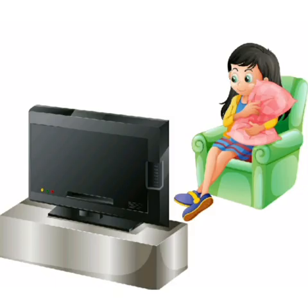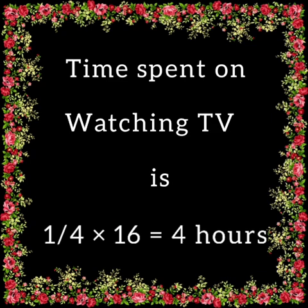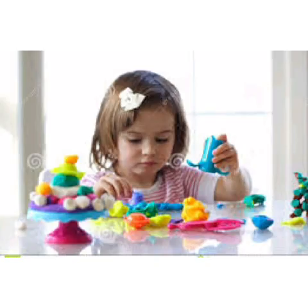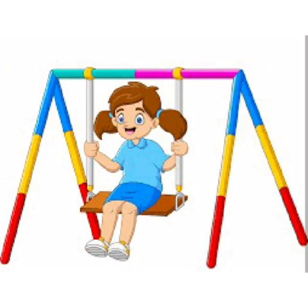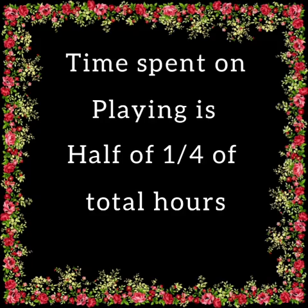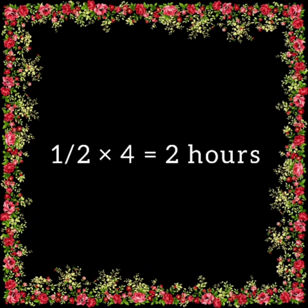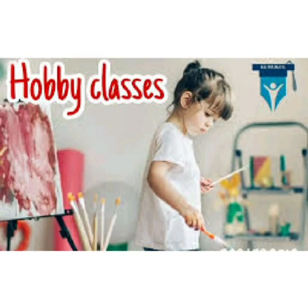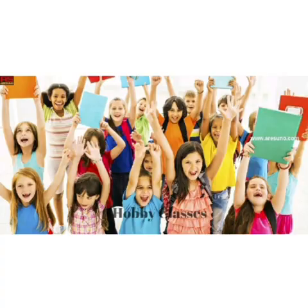Time spent on watching TV is one fourth of the total hours, that is one fourth of 16, which is 4 hours. Time spent on playing is half of one fourth of the total hours, that is half of 4, which is 2 hours. And time spent on hobby classes is the same as the time spent on playing, that is 2 hours.